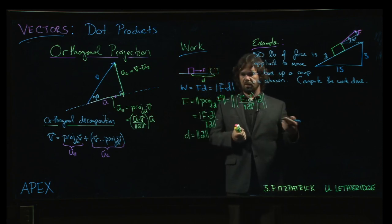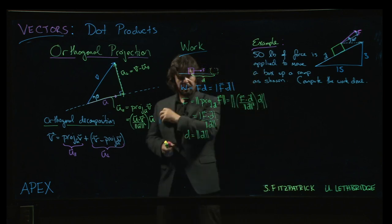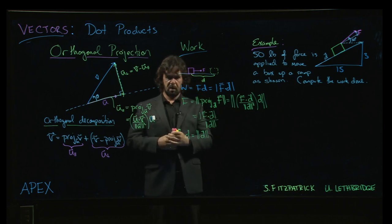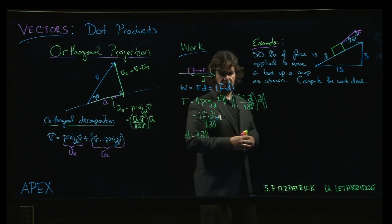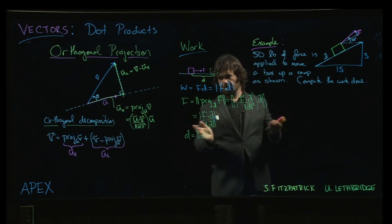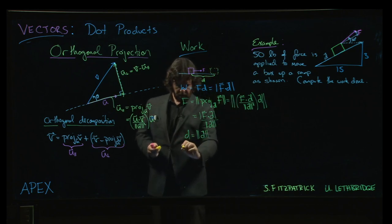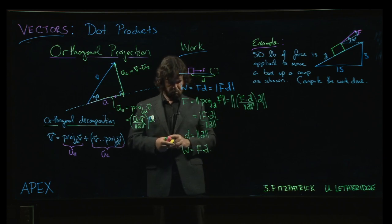But then you think about this a little bit and you realize the absolute value there is not really necessary. And in fact, it's sort of not really desirable. You do want to allow for this possibility that when you're looking at work, you might be looking at work done by a force. You might be looking at work done against a force. And so there may be times where you do actually want that quantity to come out to be negative. And so you drop the absolute value and we actually just sort of define work more generally as this dot product, F dot D.